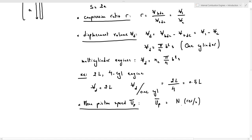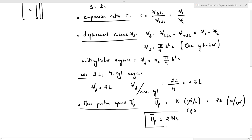The mean piston speed equals n, the crankshaft speed measured in revolutions per second (rps), multiplied by the distance traveled during one revolution, which is 2S. So the mean piston speed ū equals 2nS.